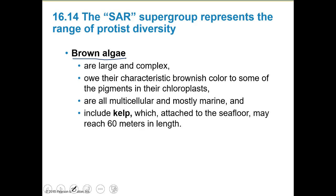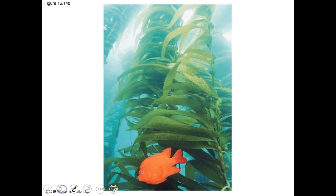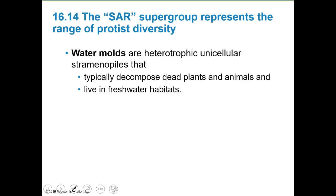Brown algae are large and complex, with a characteristic brownish color from pigments in their chloroplasts. They're mostly marine, and a great example is kelp, which we find on the seafloor and can reach 60 meters in length. It's actually not a plant — it's an algae, part of the protist group. We also have water molds, which are heterotrophic unicellular straminopiles that typically decompose plants and animals and live in freshwater habitats.